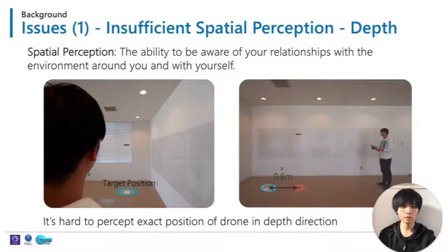In the left picture, the user feels the drone is above the target position, but in fact there is a 0.8m error. In real-world operations, sometimes it's dangerous, because users don't even know where the drone is, let alone performing accurate manipulations.